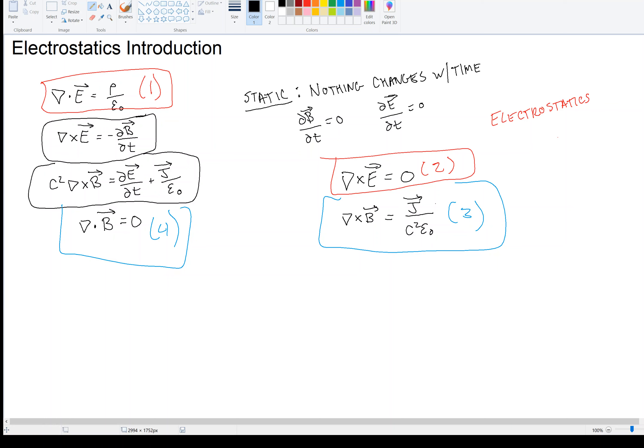We're dealing with equations one and two, which we need to understand. Electrostatics, you can see from these equations, is an example of a vector field with zero curl, equation two, and fixed divergence, equation one. Magnetostatics, from equations three and four, is an example of a vector field with zero divergence, equation four, and a fixed curl, equation three.